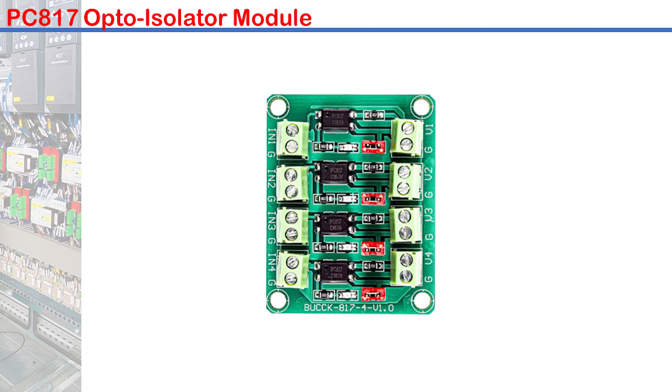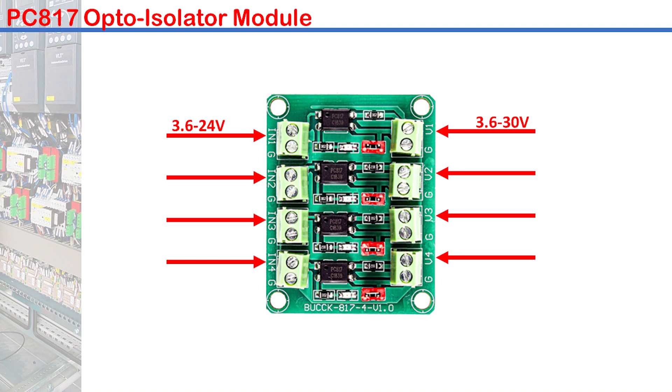This module has 4 pieces of PC817 opto-isolators. Their input and output are optically coupled with an infrared emitting diode and a phototransistor. The input voltage can be up to 24V and the output 30V.